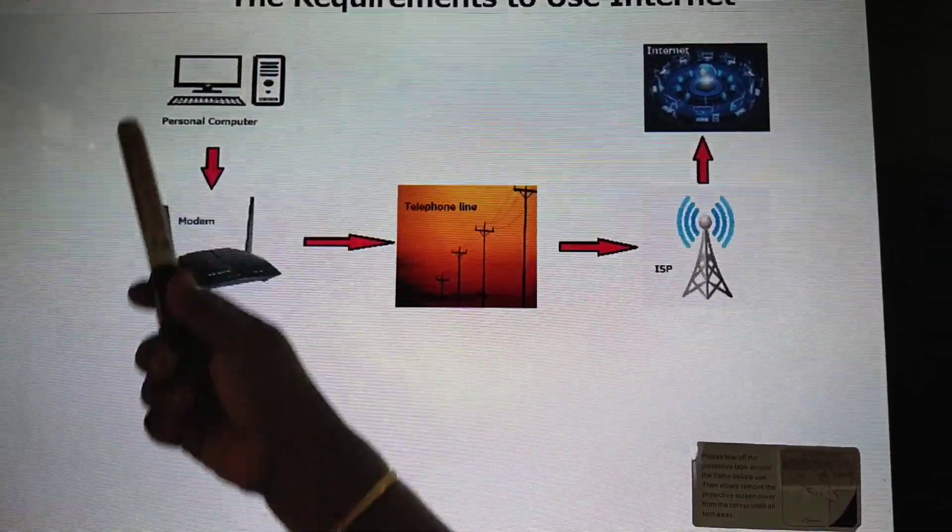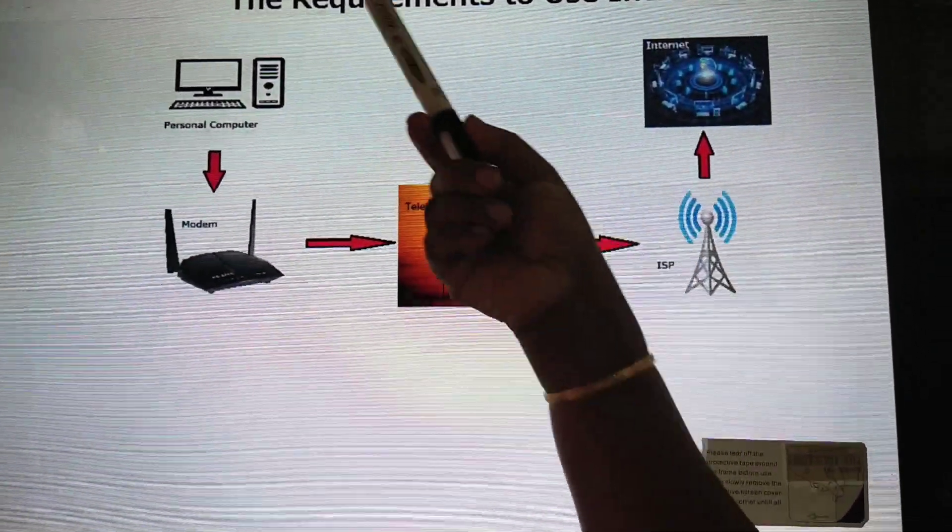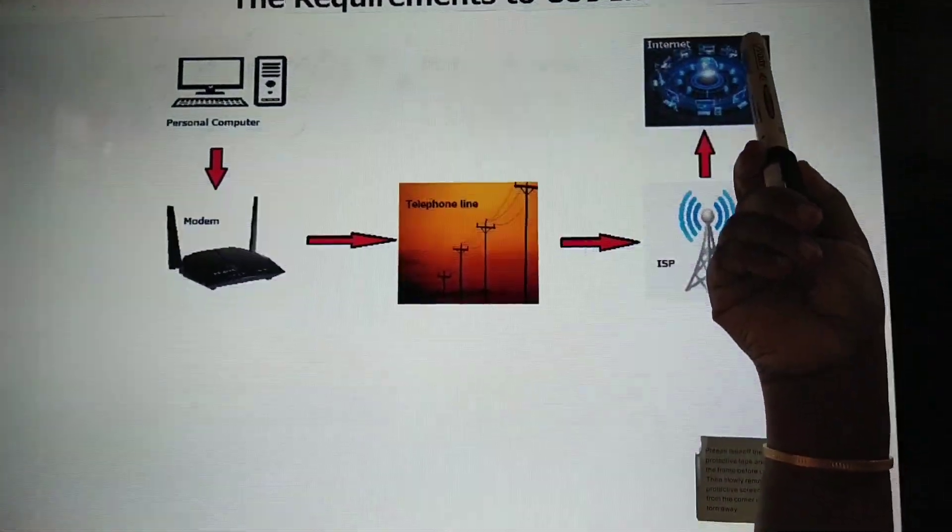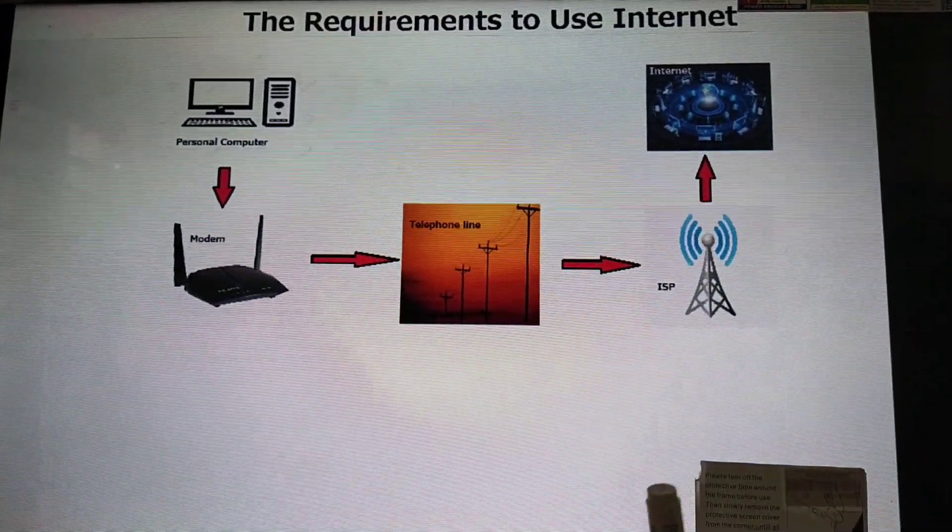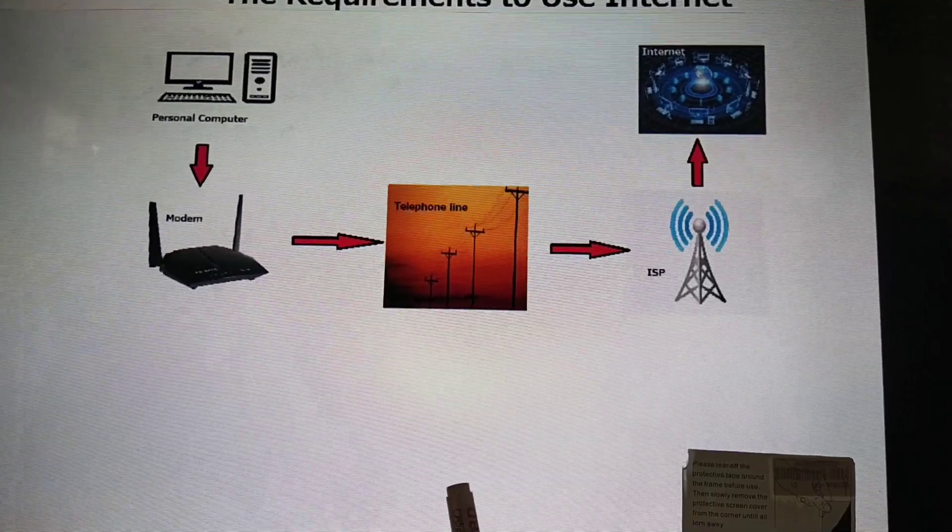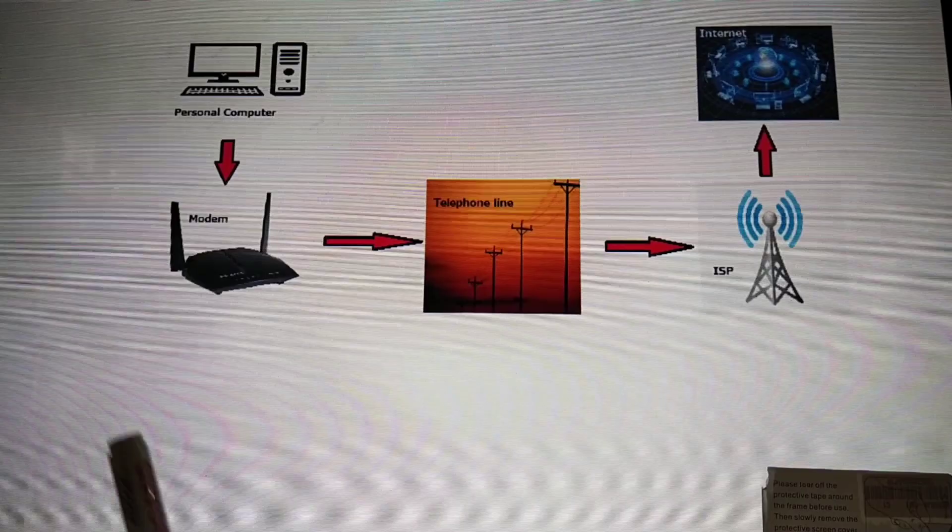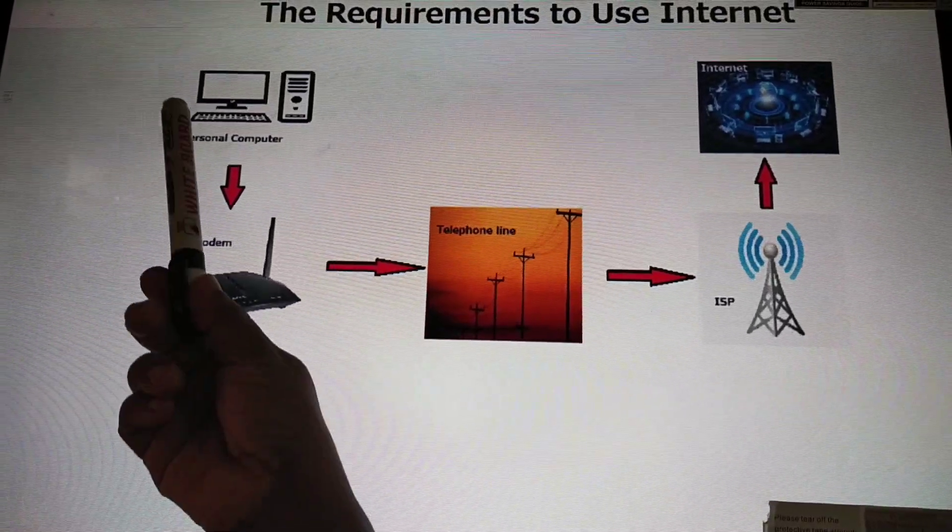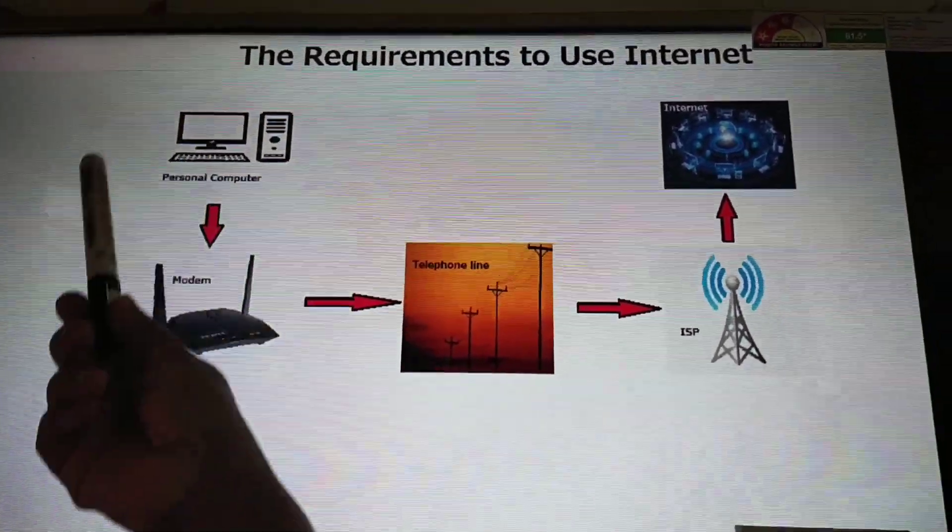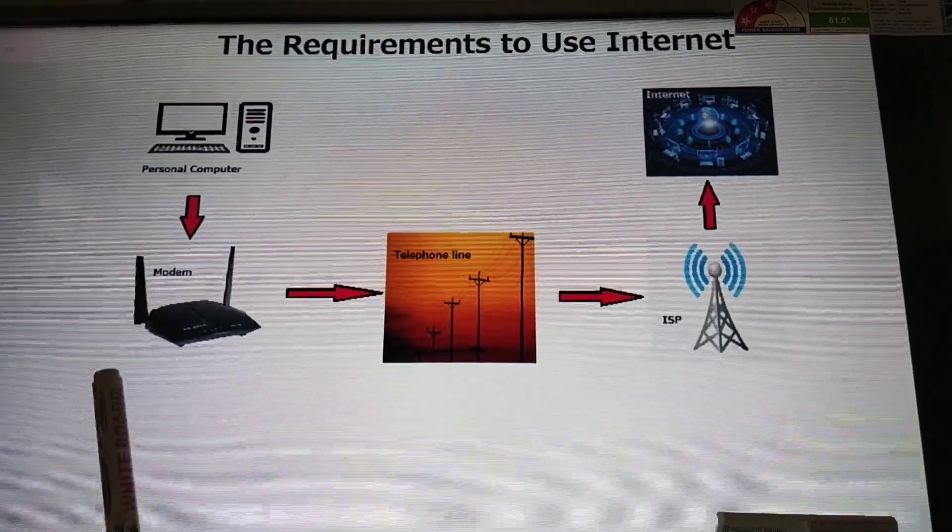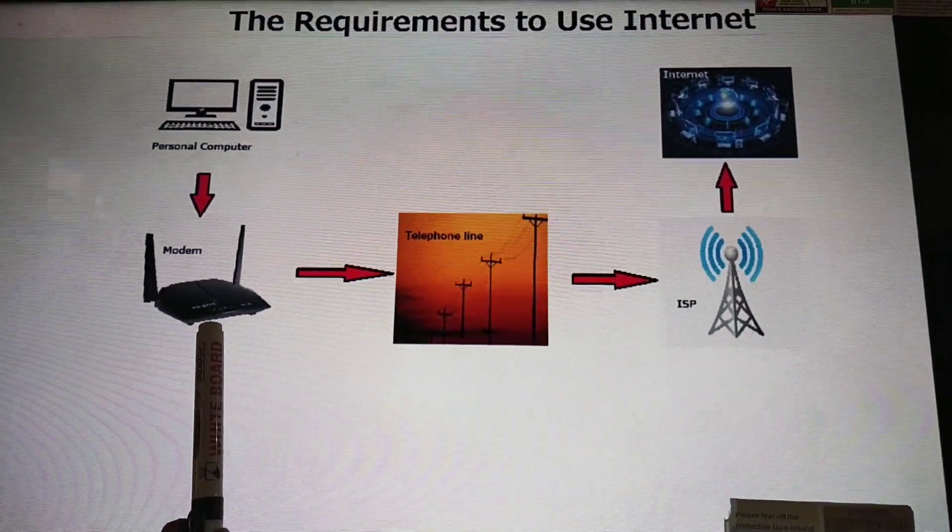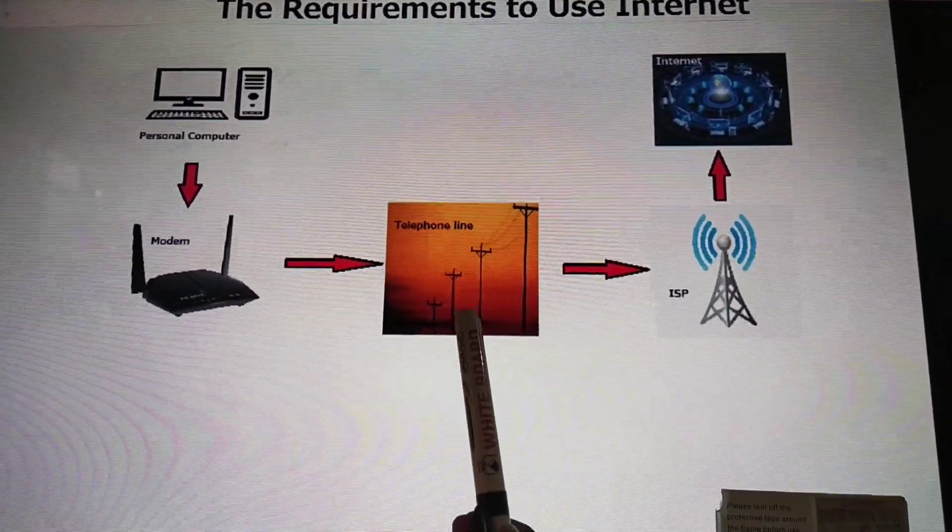Did you see this pictorial representation of the requirements to use internet? To install and use internet, the following components are generally used. What are the components? First one is we need a personal computer. Second one, modem.